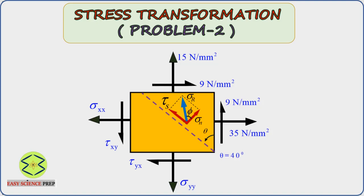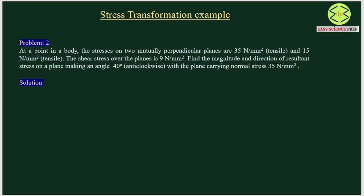Friends, in today's session we would like to solve a problem based on stress transformation. The question is: at a point in the body, the stresses on two mutually perpendicular planes are 35 N per mm² tensile and 15 N per mm² tensile. The shear stress over the planes is 9 N per mm². Find the magnitude and direction of the resultant stress on a plane making 40 degrees anticlockwise angle with the plane carrying the normal stress 35 N per mm².